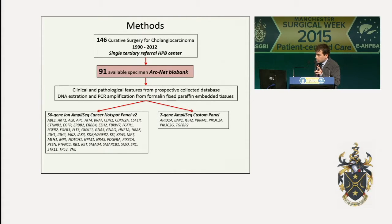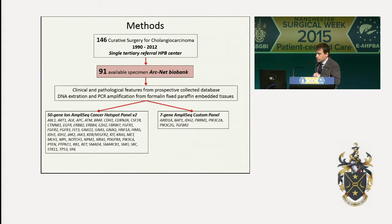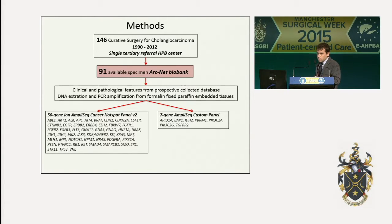From 1990 to 2012, 146 patients were submitted to curative surgery for cholangiocarcinoma in our center. For 91 patients, the surgical specimens were sufficient and available and had been acquired by the ARCNET Biobank of our university. DNA was obtained by extraction and PCR amplification from formalin-fixed paraffin-embedded tissues, and two multi-gene panels were used. The first explored a selected region of the 50 cancer-associated genes, and the second was designed according to the results of the previous whole exome sequencing study in intrahepatic cholangiocarcinoma.